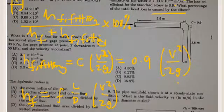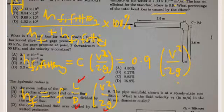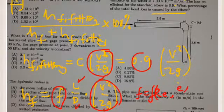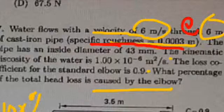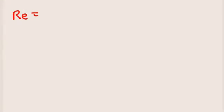We know the length is six meters, we know the diameter, and we can calculate V squared over 2g — that's one velocity head. What we still need is F, which is a function of the Reynolds number and the relative roughness E over D. The Reynolds number is equal to the velocity of flow times the diameter divided by the kinematic viscosity ν.